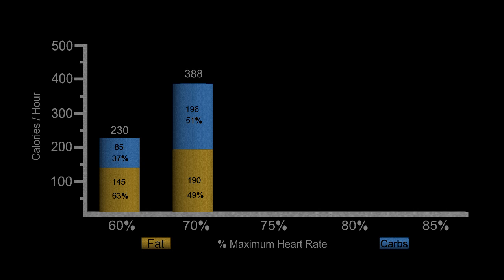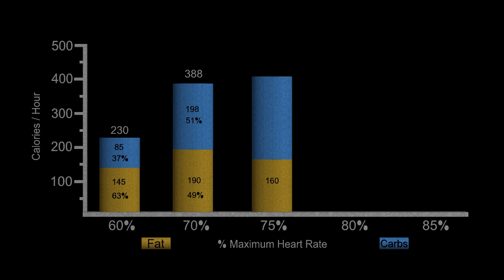Now at 75%, look what happens. 160 kilocalories per hour from fat, it drops down, and we go up on the carbohydrates. 250 kilocalories per hour for a total of 410, increase in the total number of calories utilized. This split is 39% fat, 61% carbohydrate.